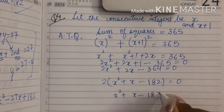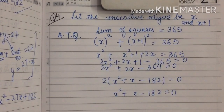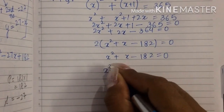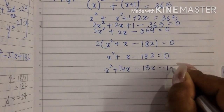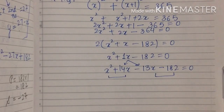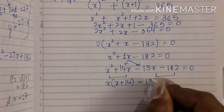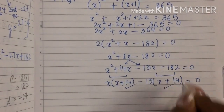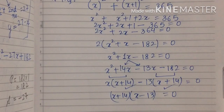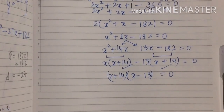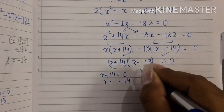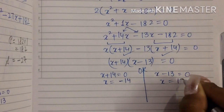This gives x squared plus x minus 182 equals 0. Now it's time to split the middle term and factorize the quadratic polynomial into linear factors. Splitting the middle term: x squared plus 14x minus 13x minus 182 equals 0. Pairing up and taking common factors from the first pair and from the second pair — the binomial matches — giving linear factors. Taking each factor equal to 0: x plus 14 equals 0, giving x equals minus 14, or x minus 13 equals 0, giving x equals 13.